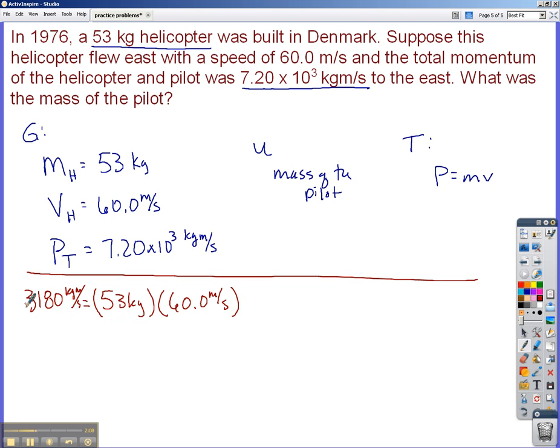So this is how much momentum just the helicopter had. This is how much total momentum there was. So what I can do now is I can subtract this from here and get the momentum due to the pilot. Now 7.20 times 10 to the third, that's just a fancy way of saying 7,200, right? I'm going to move the decimal one, two, three places because of that.